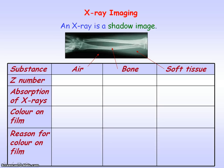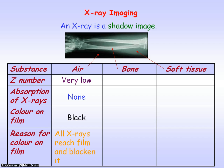An x-ray image is a shadow image. For air, because it has a very low density — we say it has a proton number that is very low — it does not absorb any x-rays. So all the x-rays will reach the film and blacken it, and that's why air appears black on an x-ray image.